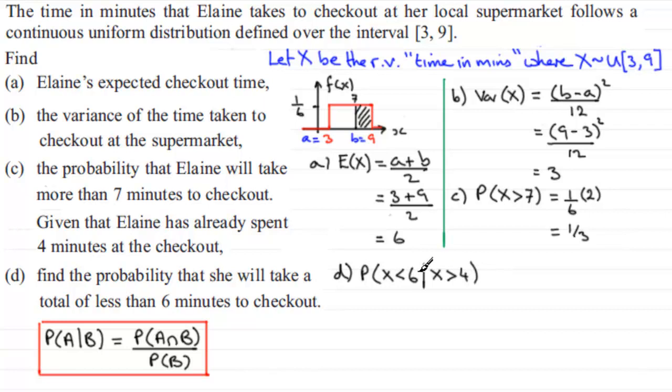So, we want the probability of both these events, if you like, A and B occurring. So, if you've got to be less than 6, but at the same time greater than 4, then we're looking at the probability that X lies between those two values, between 4 and 6. So, that's our A and B, if you like, and then we divide it by the probability of the given event. So, in this example, it's dividing it by the probability of the given event, which is the probability that X is greater than 4.